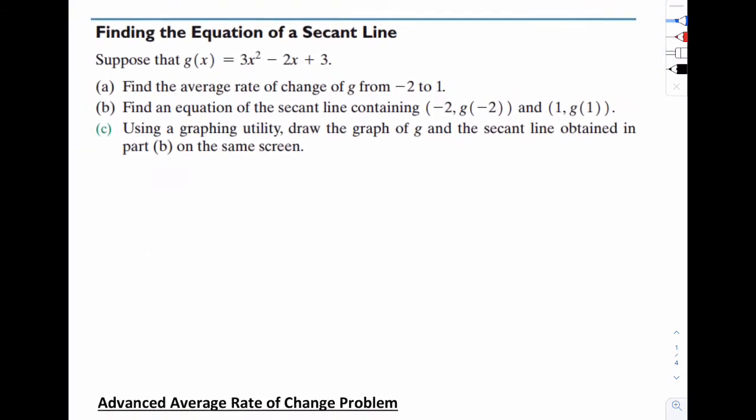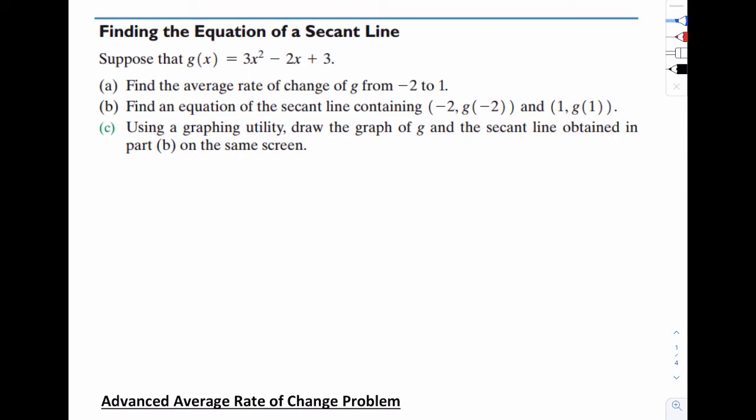Now you can see the example here. It says find the equation of a secant line. First for a, it says find the average of change from negative 2 to 1. Let's plug in negative 2. That would be 12 plus 4 plus 3. That's 19. The other point is 1. Plug in 1, we get 3 minus 2 plus 3. That would be 4. That would be 4 minus 19 over 1 plus 2. That's negative 15 over 3, negative 5. Here's the slope or the average rate of change.